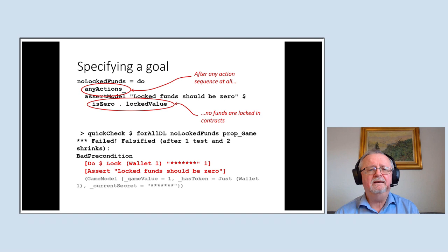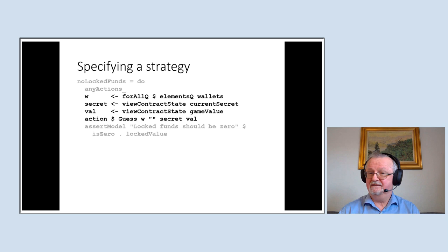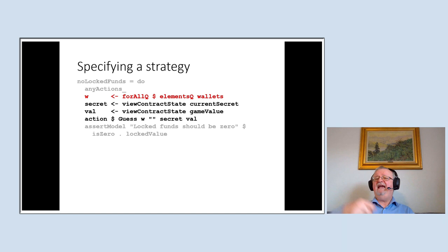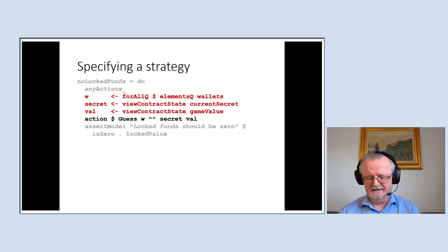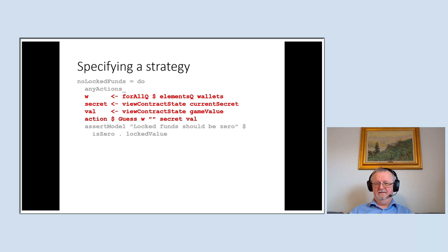So how do I specify a strategy? I add a little bit to the property. The strategy picks any wallet and enables it to withdraw all funds from the game by making a correct guess. To compute the correct guess, I read the current secret and current value from the contract state, then perform an action making a correct guess. After that, I should end up with all the money and none left in the contract.